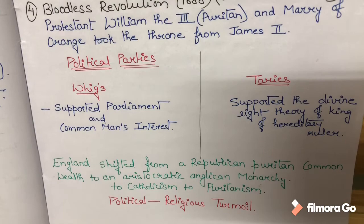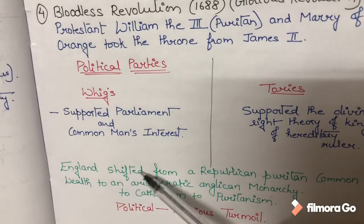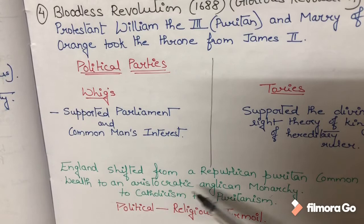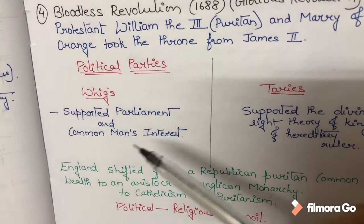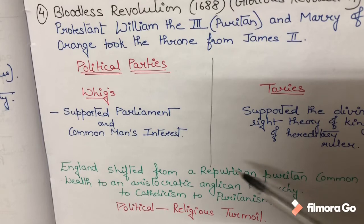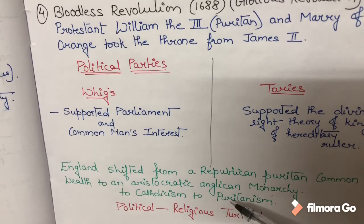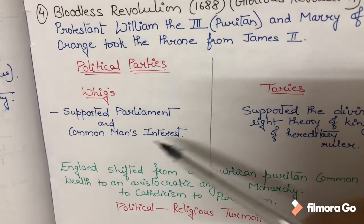If we describe this age in a single line, we can say that England shifted from a Republican Puritan Commonwealth to an Aristocratic Anglican Monarchy, to Catholicism, and then to Puritanism again. Oliver Cromwell represented the Puritan Commonwealth; Charles II represented Aristocratic Anglican Monarchy; James II followed Catholicism; and William III followed Puritanism. This one sentence describes the whole Restoration Age.